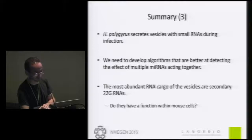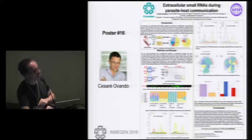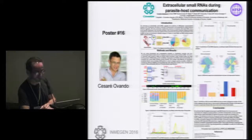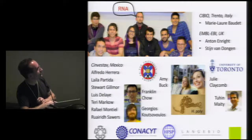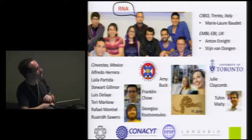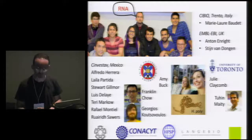As a summary: this worm H. polygyrus secretes vesicles during infection which contain small RNAs. We need to develop better algorithms to detect the effect of multiple microRNAs acting together. In this particular case, the majority of these small RNAs do not seem to be microRNAs, but are secondary 22-G RNAs, and thus we have no idea yet if they are doing something within the mouse cells or how to start studying what they could potentially do—but we're working very closely with the experimental side of the project to work this out. All the bioinformatics is being done by postdoc Cesare, who has a poster at number 16. I'd like to thank the members of my lab, Amy Buck and Julie Claycombe's collaborative teams, and their postdocs Franklin, Georgios, and Tuhin. Thank you all for your attention.